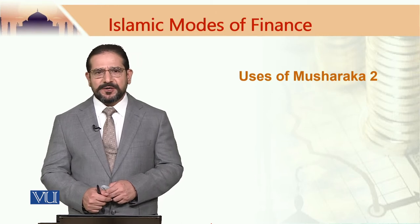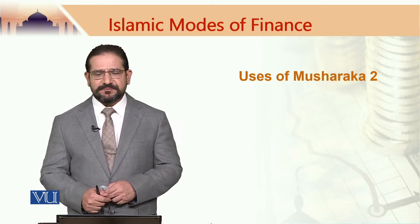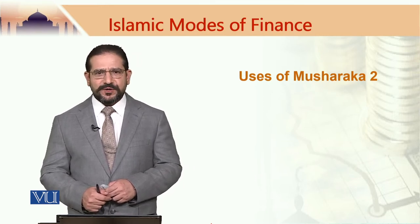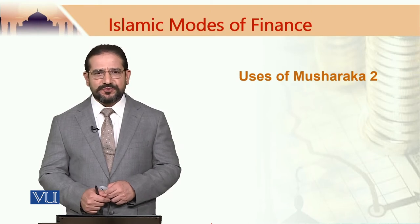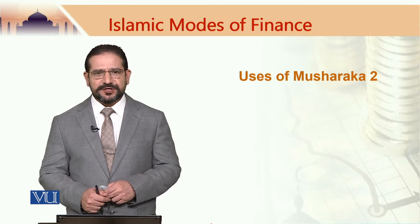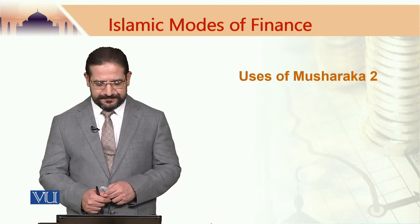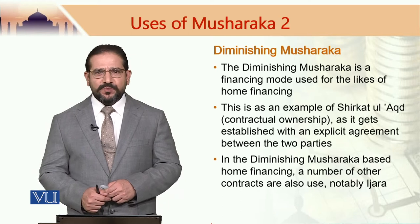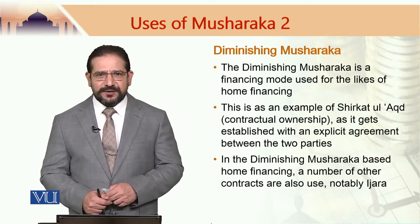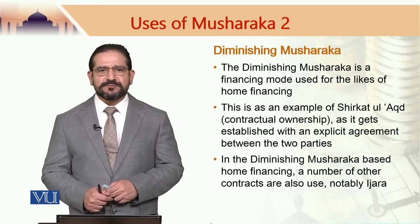In our previous module, we looked into an example of Shirkatul Mill, and in this module we would try to explain an example of Shirkatul Aqt, and that would be by way of Diminishing Musharaka.